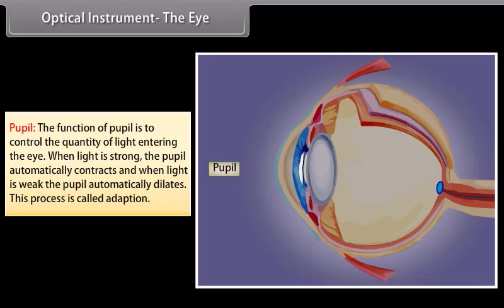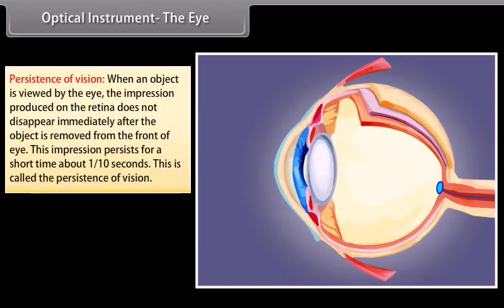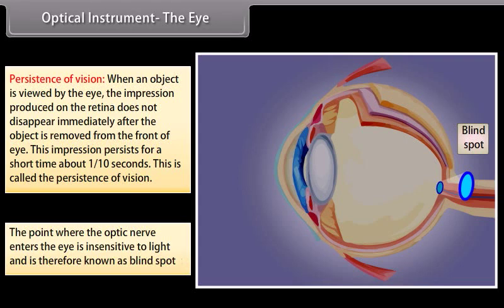The pupil controls the quantity of light entering the eye. When light is strong, the pupil automatically contracts; when light is weak, it automatically dilates. This process is called adaptation. Persistence of vision: the impression on the retina does not disappear immediately after an object is removed; it persists for about 1/10 of a second. This is called the persistence of vision. The point where the optic nerve enters the eye is insensitive to light and is known as the blind spot.